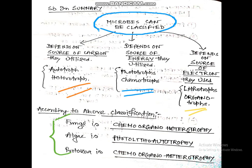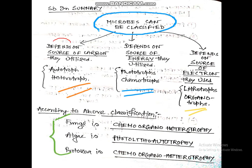In summary, microbes can be classified based on three sources: carbon source — autotrophs and heterotrophs; energy source — phototrophs and chemotrophs; and electron source — lithotrophs and organotrophs.